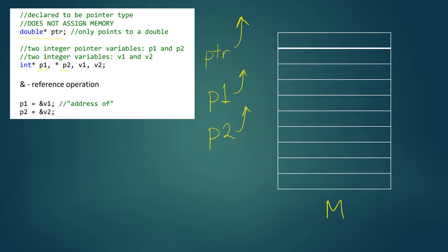Let's take a look at V1 and V2. V1 and V2 are not pointers — they are actual integers. So when we declare V1 and V2, you actually get allocated memory. V1 would be allocated somewhere where there's free space in memory, and then V1 will have an address. So this would be the address of V1. And then you have V2, which I'm just going to put here in memory. This would be the address of V2.